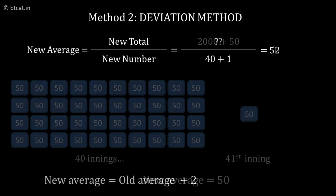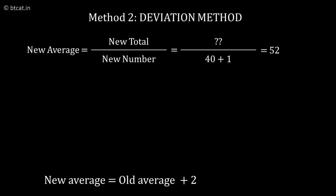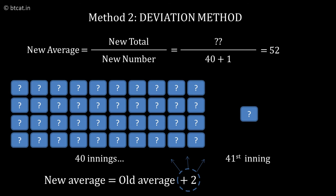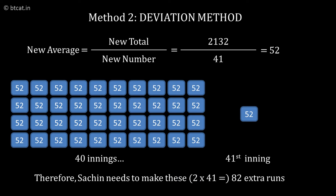But he is increasing the average by 2 runs. Therefore, it is akin to saying that these 2 runs must be distributed to 41 innings. In other words, he must be making 82 runs more than the average.